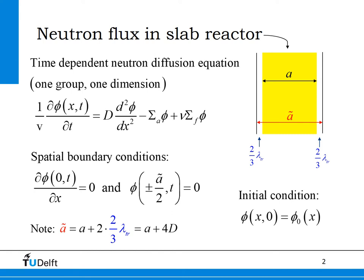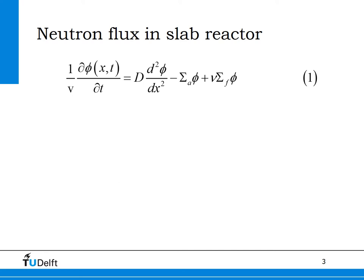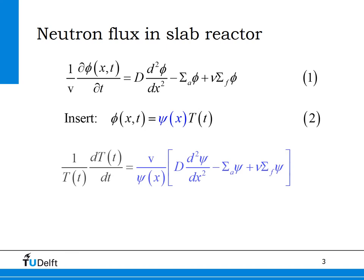We also need initial conditions, which means the neutron flux should be given at some time t, here indicated with t-zero. We will use the method of separation of variables to solve for the neutron flux density in the slab. To this end, we split the neutron flux into a term only depending on space, indicated with the Greek character psi, and one term only depending on time, indicated with capital T. If we insert this separation into the diffusion equation, the left-hand side depends only on time while the right-hand side depends only on space. Because both sides must be equal to each other, they must equal a constant, which we indicate with minus lambda.